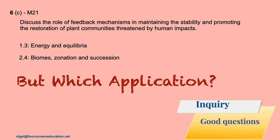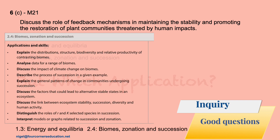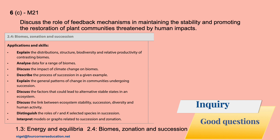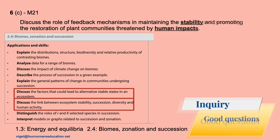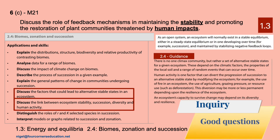Which of the applications is it coming from? Zooming in: 'Discuss the role of feedback mechanisms, stability, promoting, restoring plant communities threatened by human impacts.' We can see very quickly: 'discuss the factors that could lead to alternative stable states' and 'discuss the link between ecosystem stability, succession, diversity and human activity.' The guidance is given to us — very clearly.